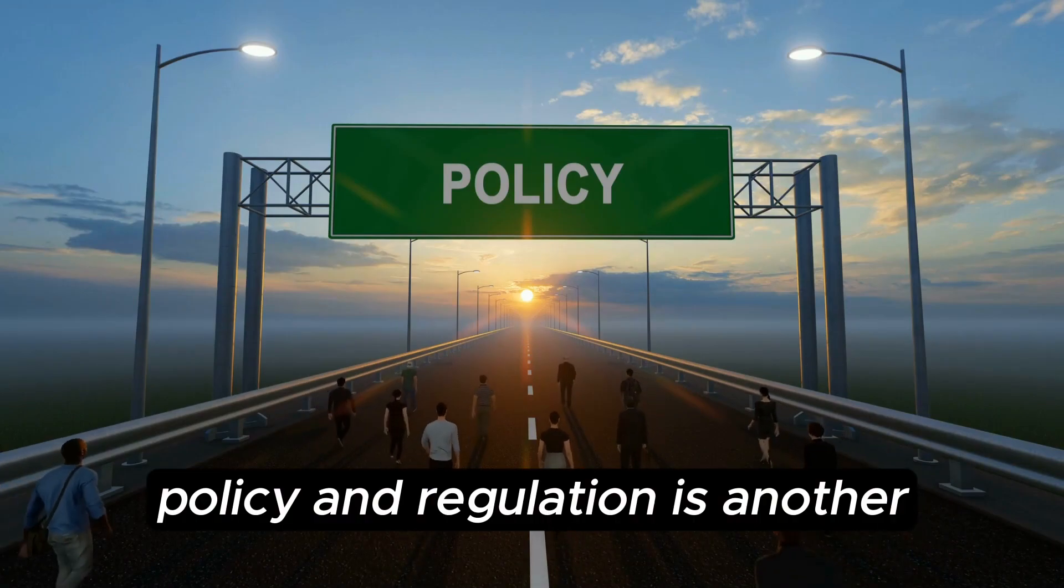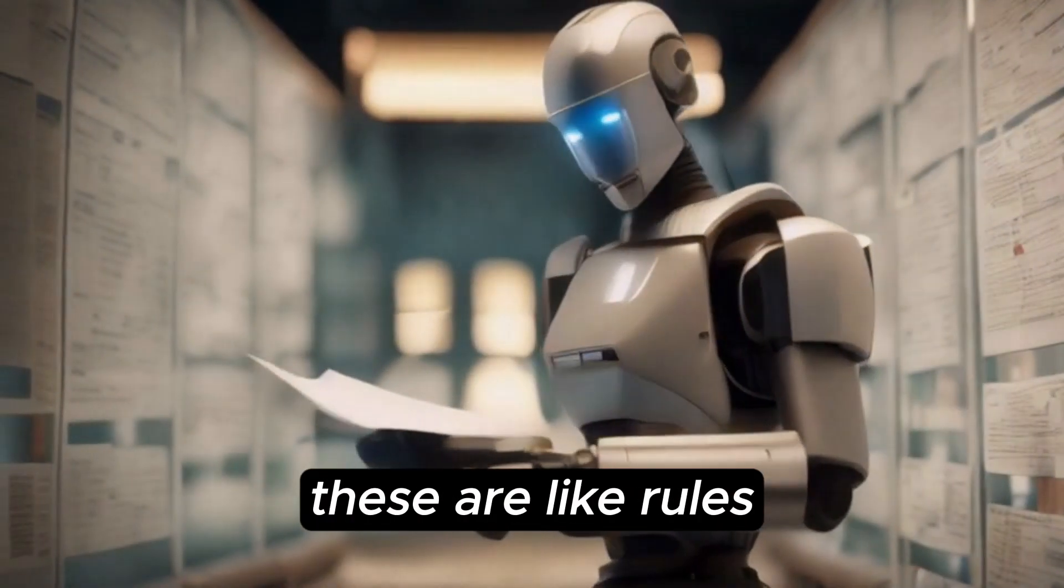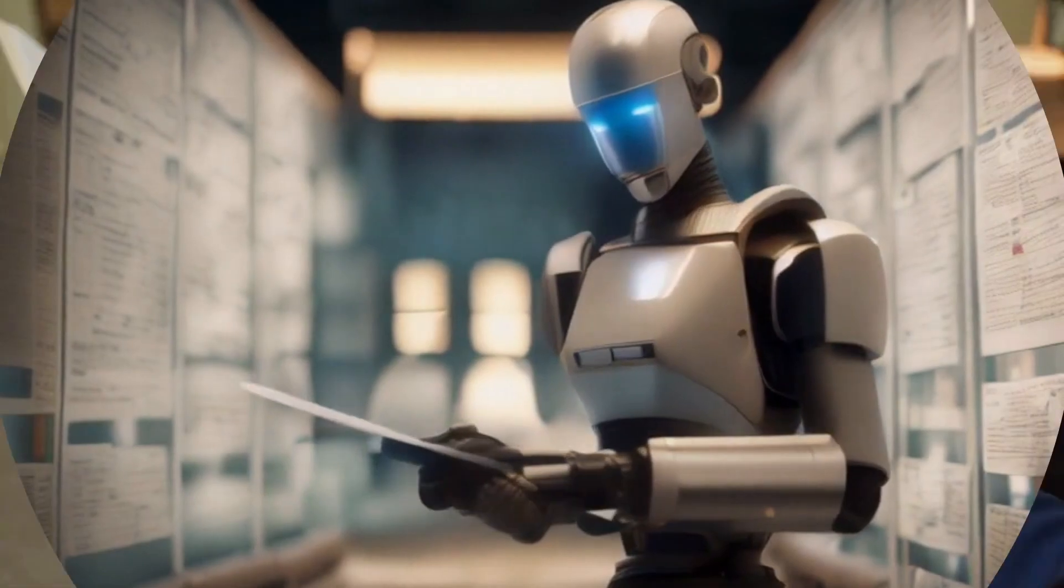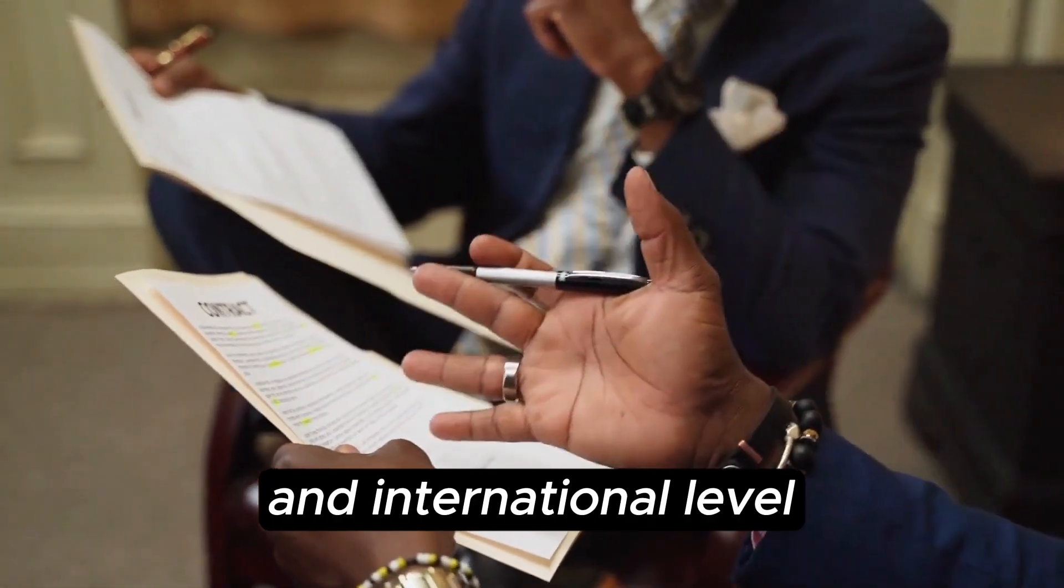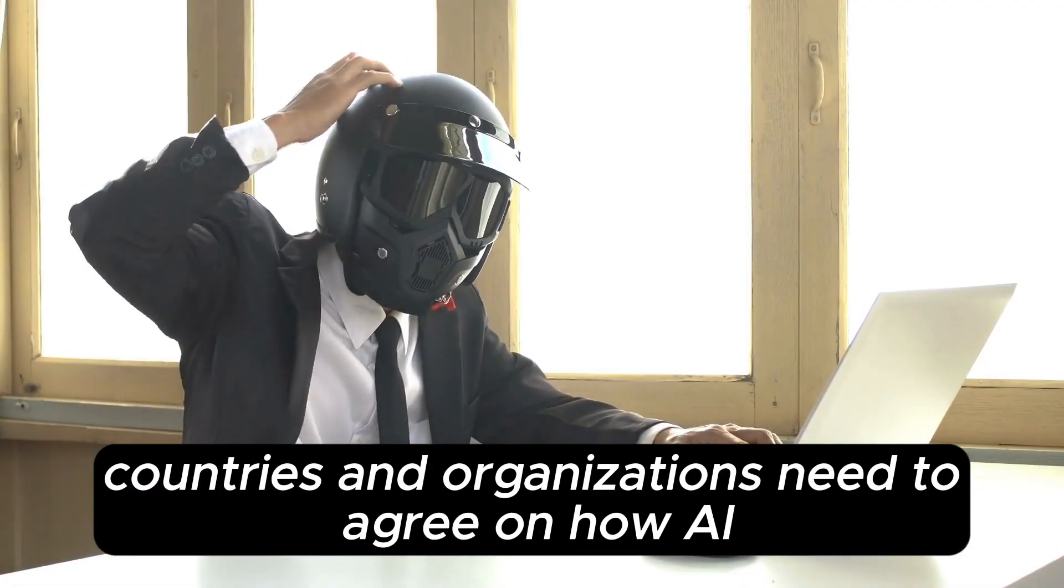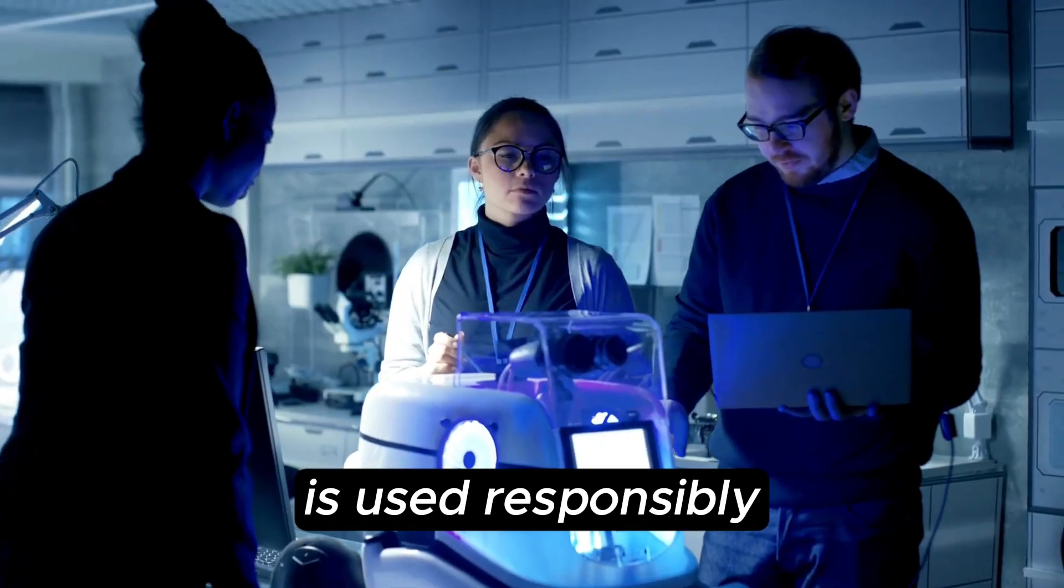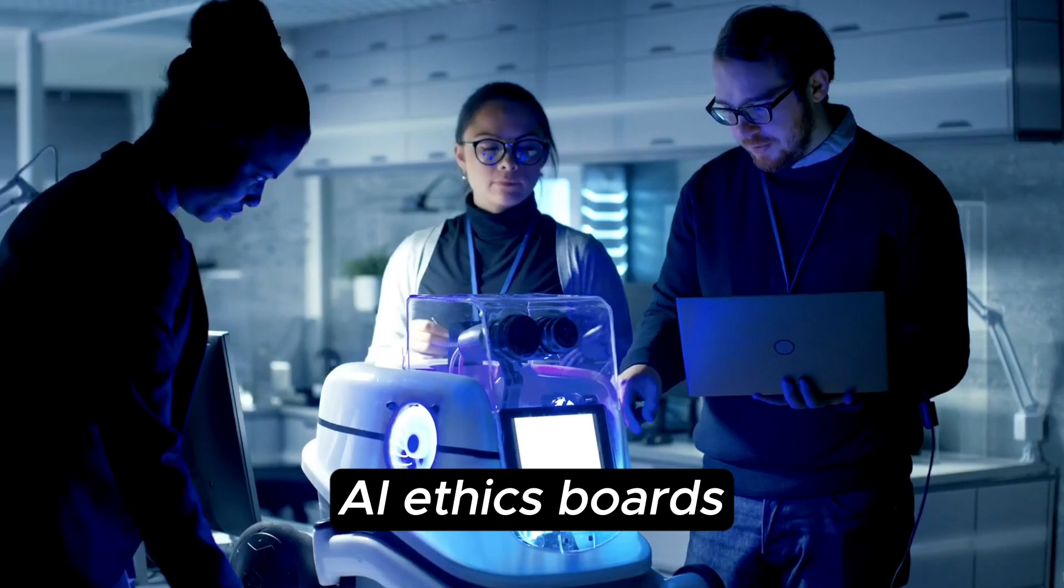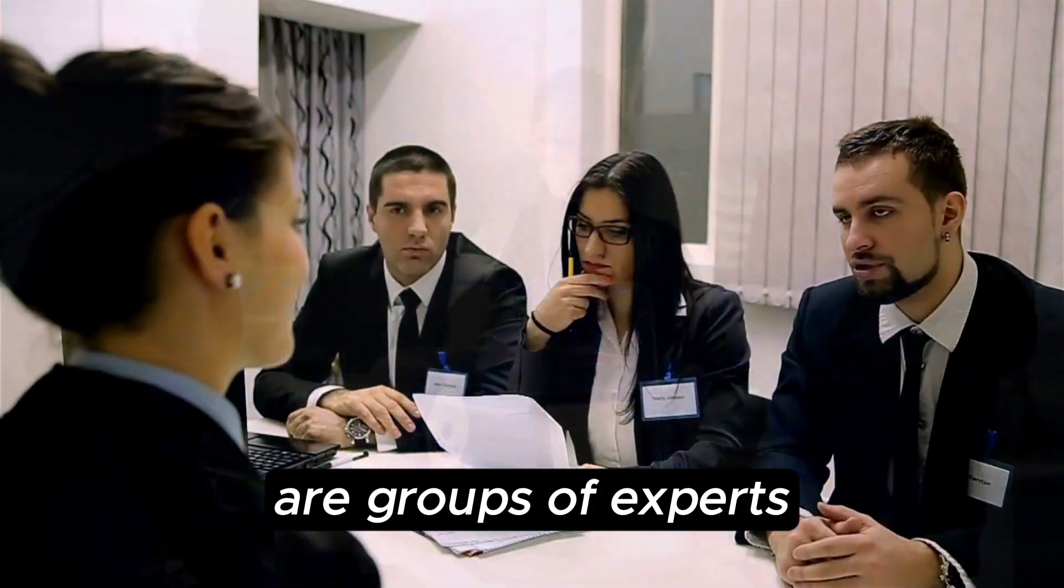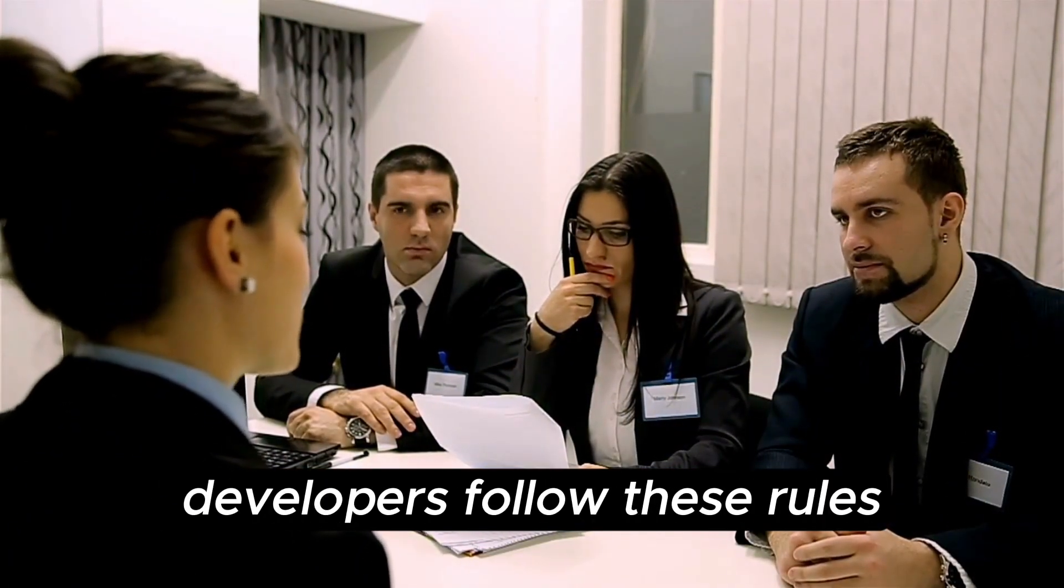Policy and regulation is another important aspect. These are like rules and laws for AI. At a national and international level, countries and organizations need to agree on how AI should be used and what it shouldn't do. This ensures that AI is used responsibly. AI ethics boards and commissions are groups of experts who make sure AI developers follow these rules and don't break them.